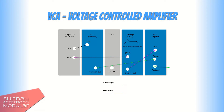So whenever a gate signal gets sent, either from a sequencer or by holding down the key of a MIDI keyboard, the gate signal goes through the envelope generator where we shape it, and from there to the VCA. As soon as the signal hits the CV input of the VCA, it opens the VCA so we can hear the tone.